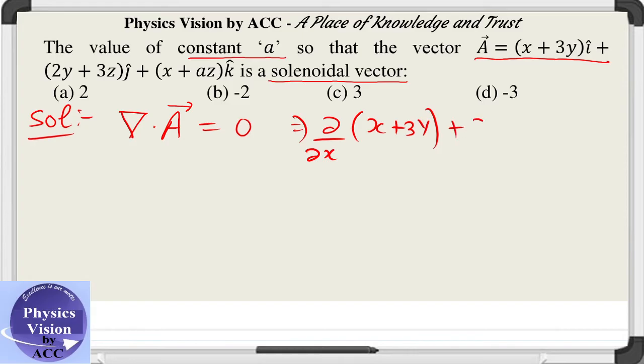We will be getting the term ∂/∂y of the j component, which is 2y + 3z, and ∂/∂z of this component, which is x + az. Now take the derivative.